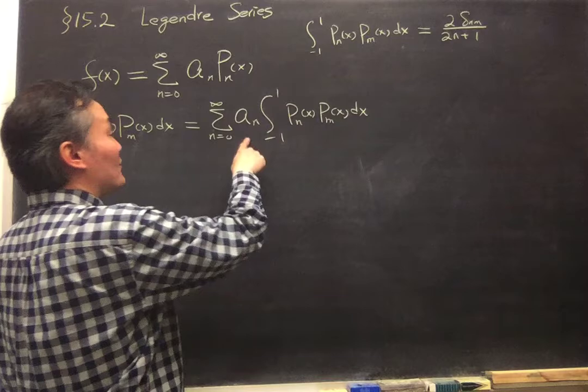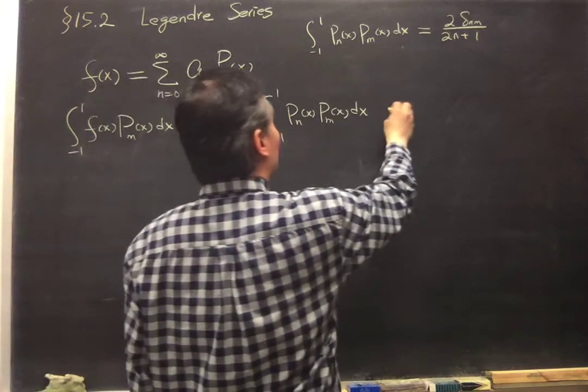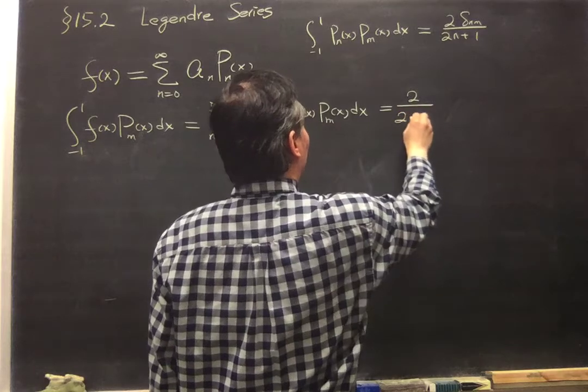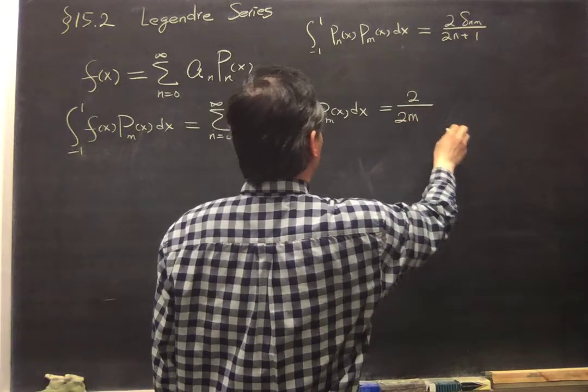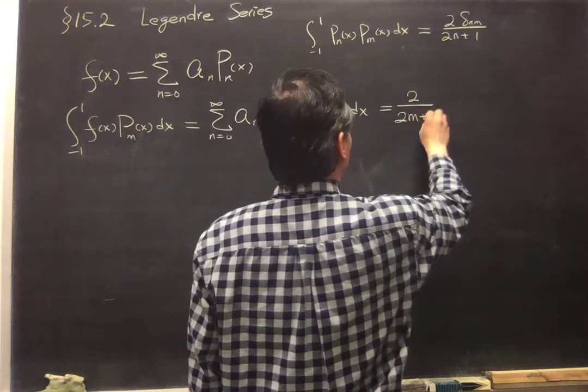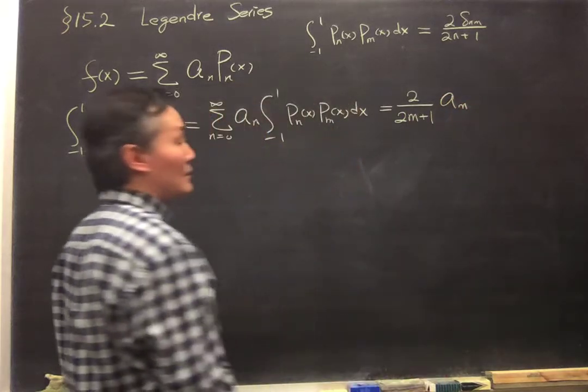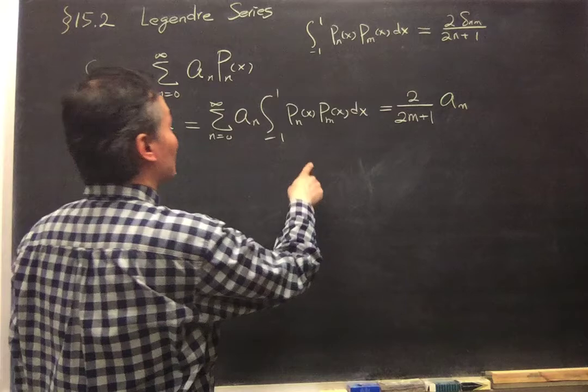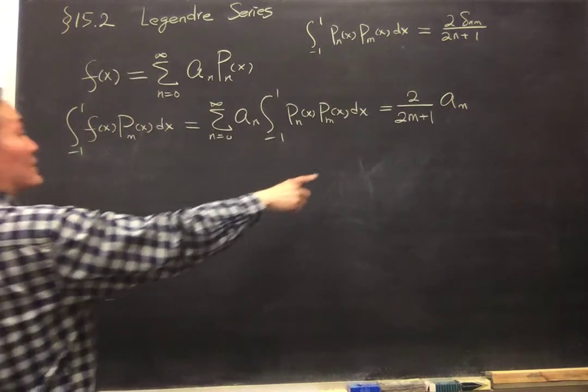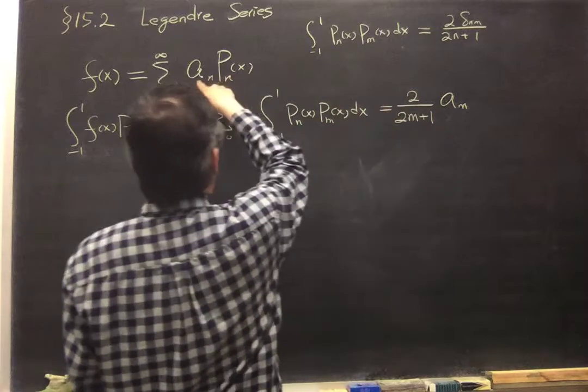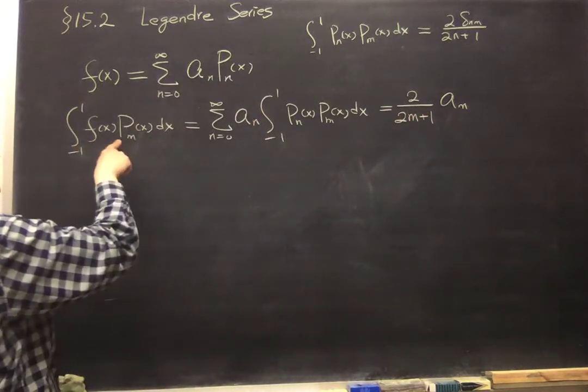So we will only pick up one term. So this will be equal to 2 over 2m plus 1 times a_m. Okay? So it means that a_m, or you can call it back a_n because this is multiplied by P_m.